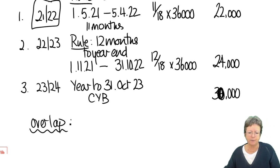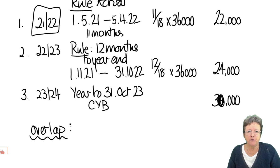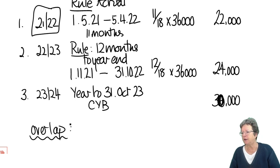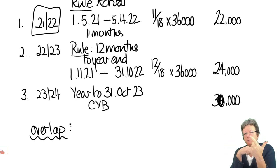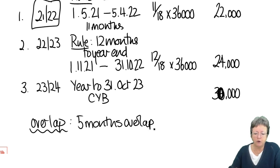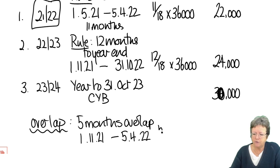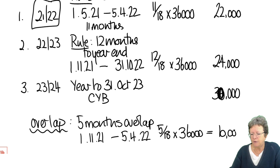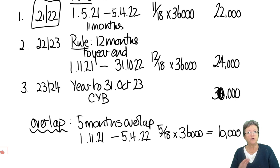What period overlaps? There is some overlap because that 18-month set of accounts has been taxed twice. How far is the end of October from the next 5th of April? November, December, January, February, March — five months. So we are looking for five months of overlap. That five months would be from 1st November 2021 to 5th April 2022, which is 5/18ths times £36,000, which is £10,000. If you're not sure, draw it out and confirm to yourself that you're happy with that.